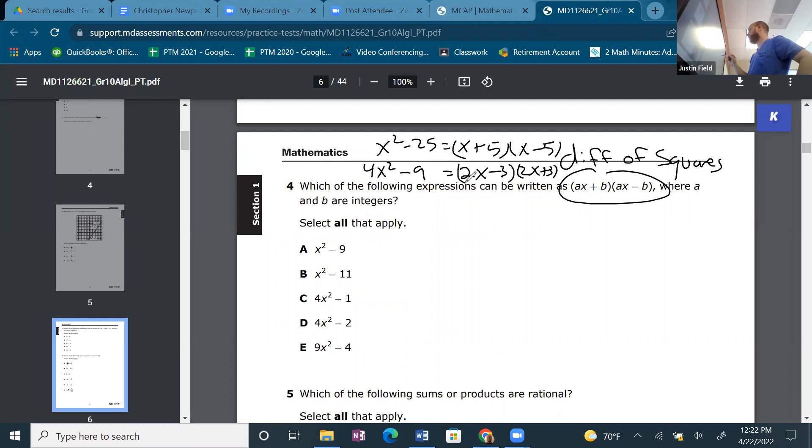So which of the following expressions can be written like that? Any that are difference of squares, where we have integers. So, actually, everything can be written of a difference of some type of square, but they only want integers.